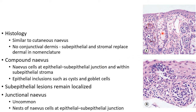In compound nevus, there will be nevus cells at the epithelial sub-epithelial junction, and the nevus cells are also present within the sub-epithelial stroma. There can be epithelial inclusions such as cysts and goblet cells in compound nevus.